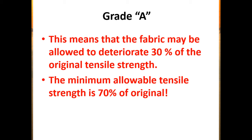This means the fabric may be allowed to deteriorate 30 percent of the original tensile strength. The minimum allowable tensile strength is 70 percent of the original. New Grade A fabric must meet 80 pounds per inch; 70 percent of that is 56 pounds per inch.